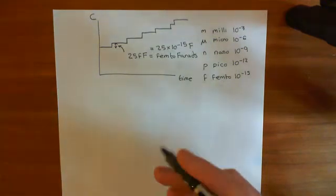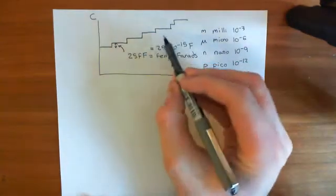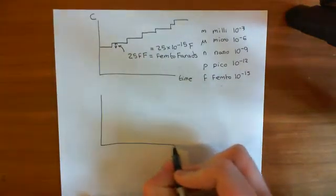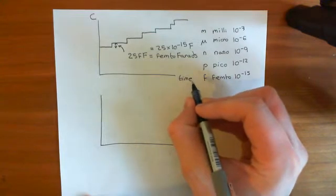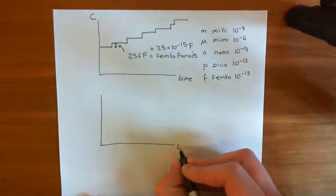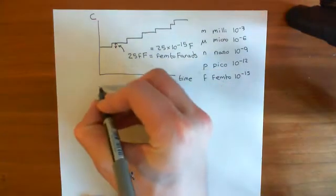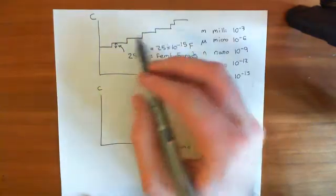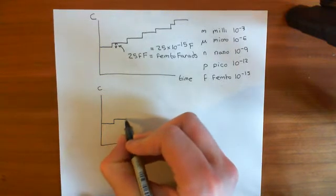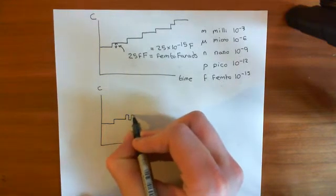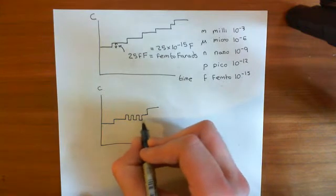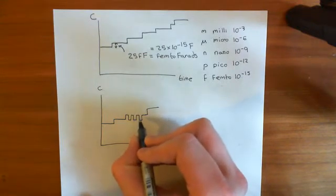And basically what they saw is they saw this, but they also saw other things. So they saw time on the x-axis and capacitance on the y-axis. This is not quite what they saw. They did see these step-ups like this, but also they saw things like this, where it went up and down and up and down and up and down.